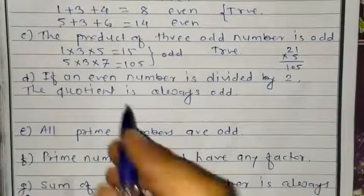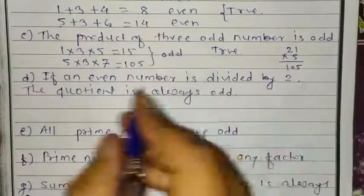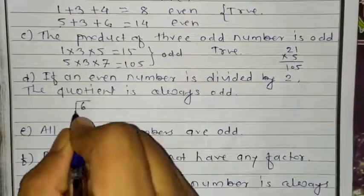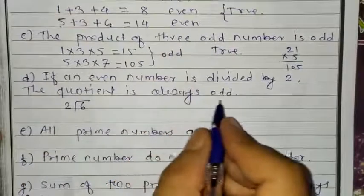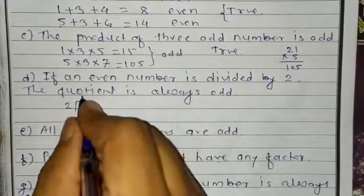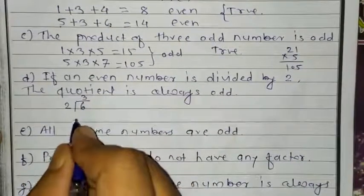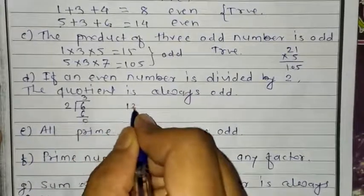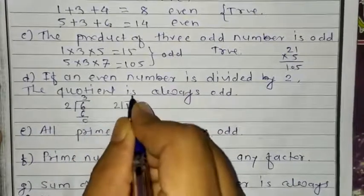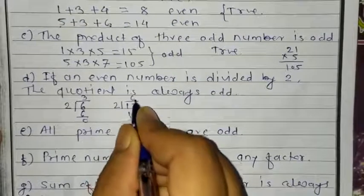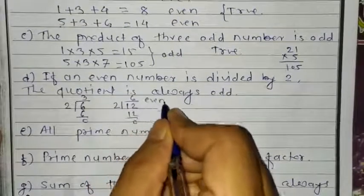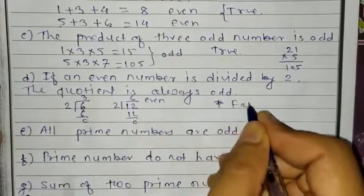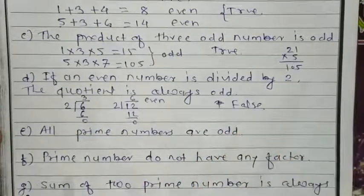Question D: if an even number is divided by 2, the quotient is always odd. Taking even number 6: 6 divided by 2 gives quotient 3, which is odd. But if I take another number, 12: 12 divided by 2 gives 6, and 6 is an even number. The statement says always odd, but it is not true for all cases. So it is false.